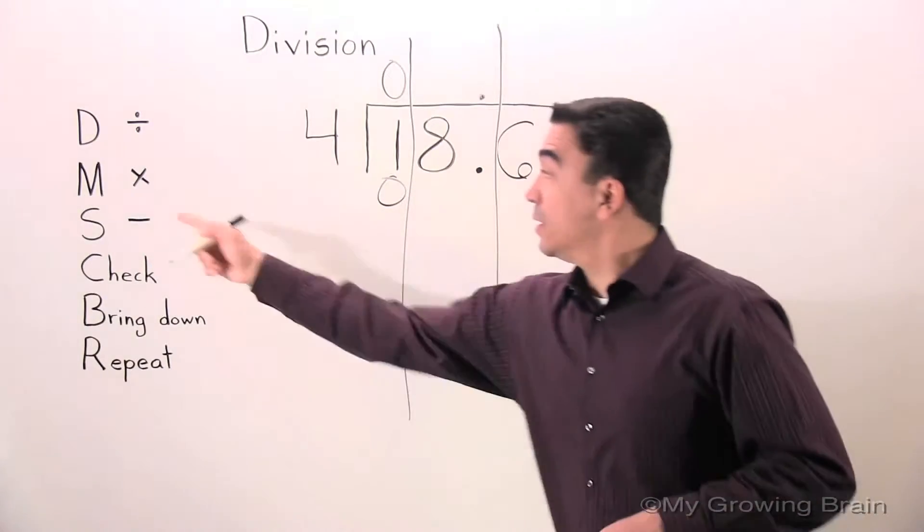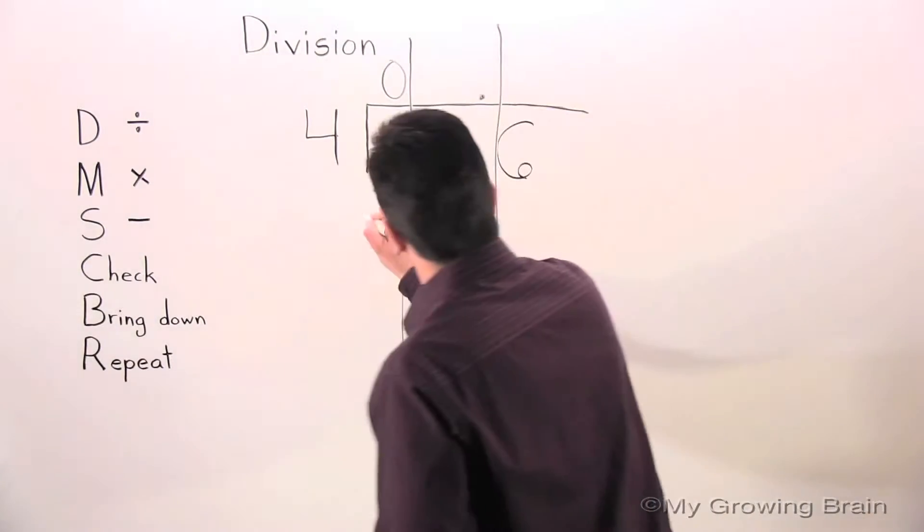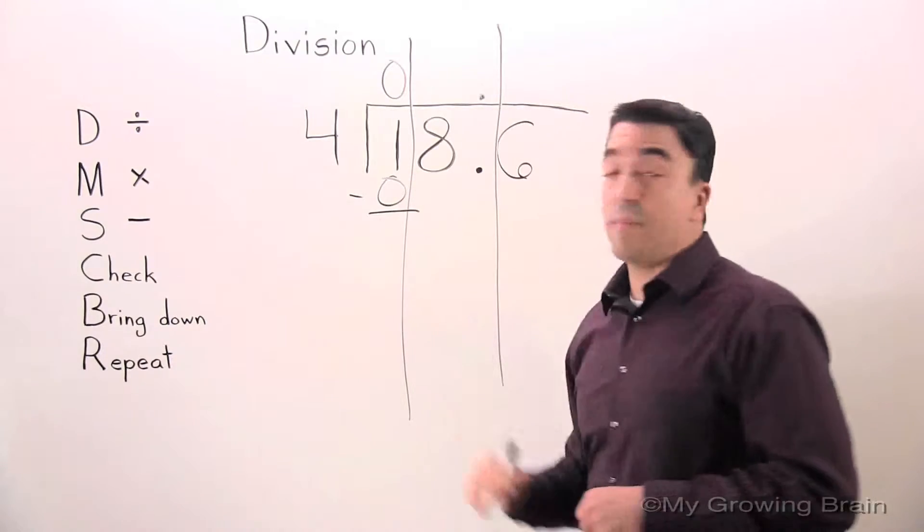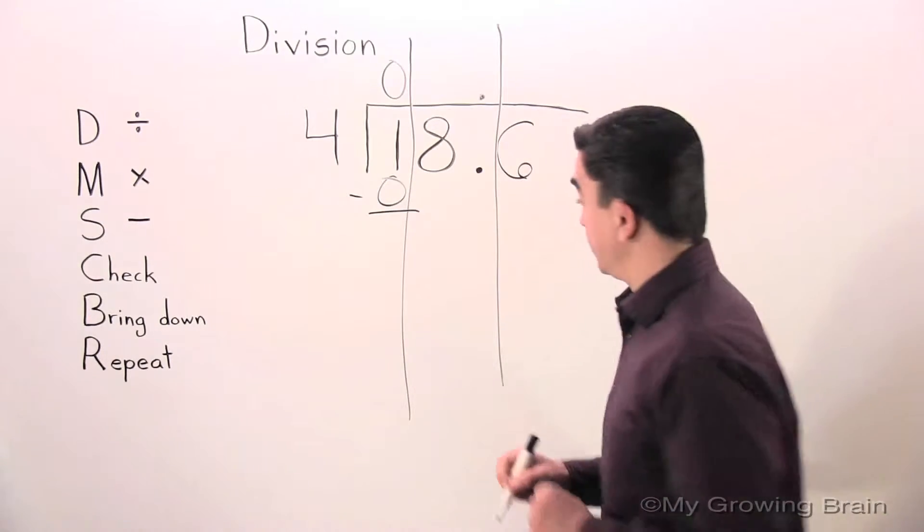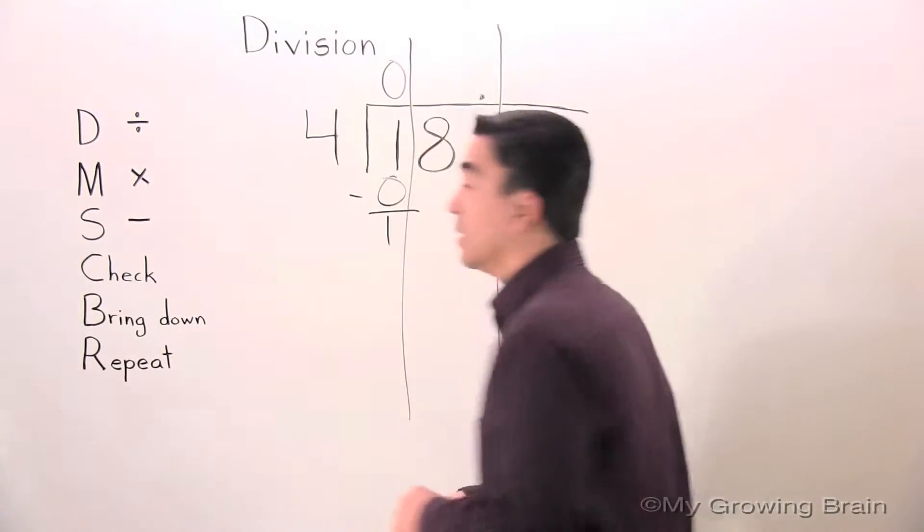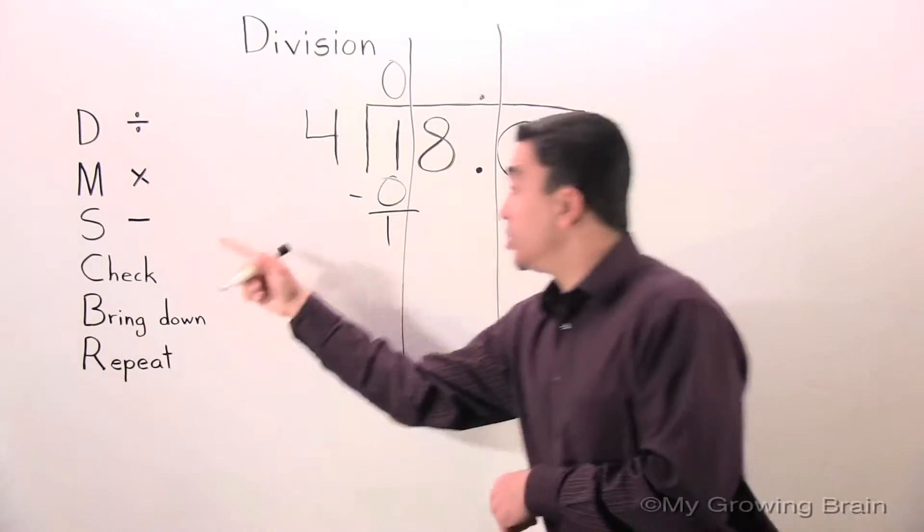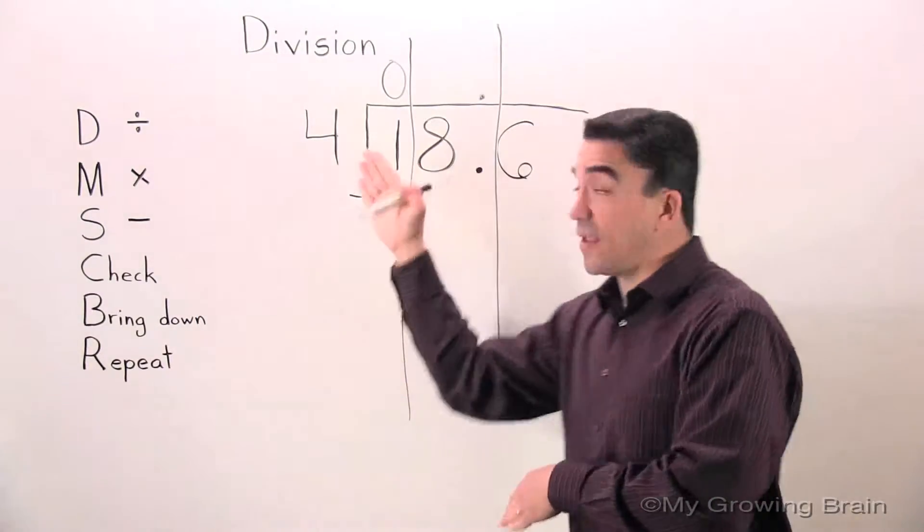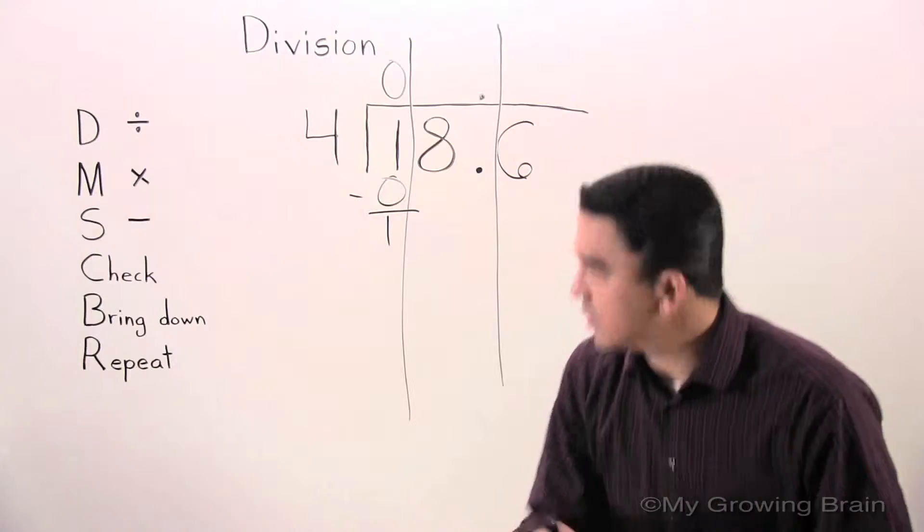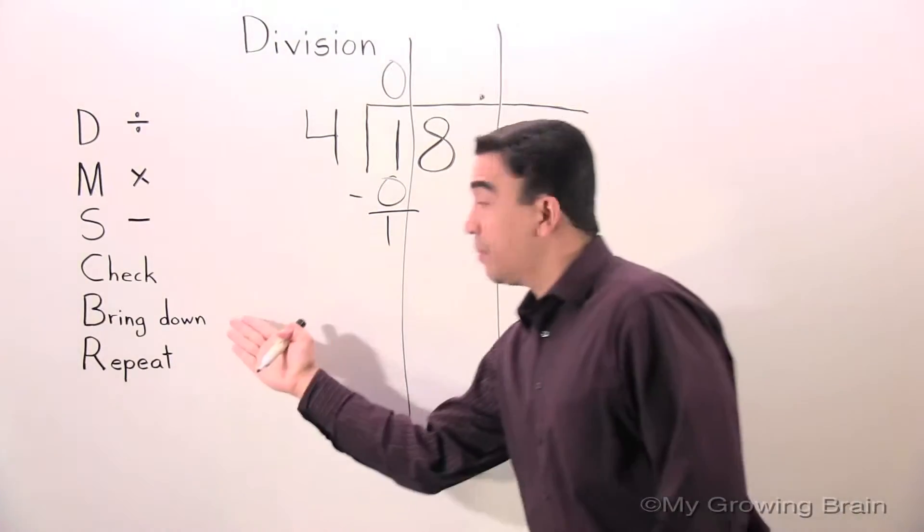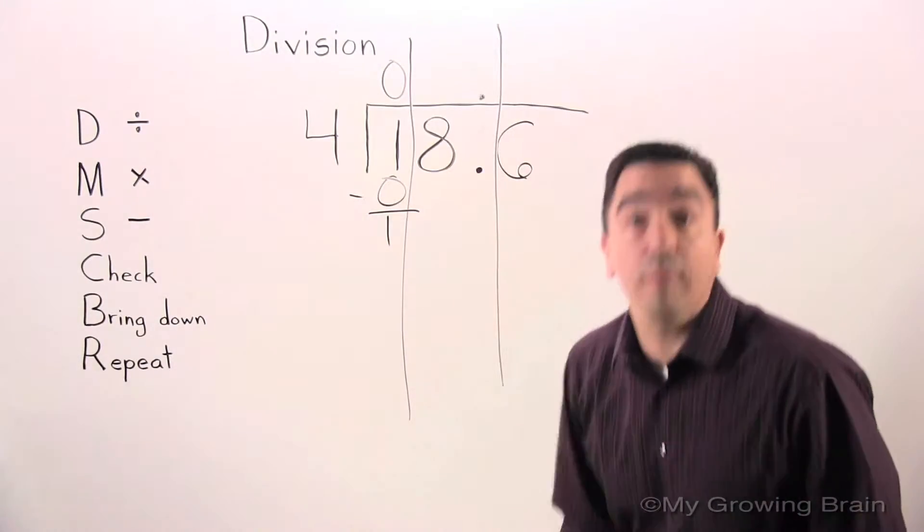Next step: subtract. 1 minus 0 is 1. Next step: check. 1 is less than 4. Keep on going. Next step: bring down. Bring down the 8.